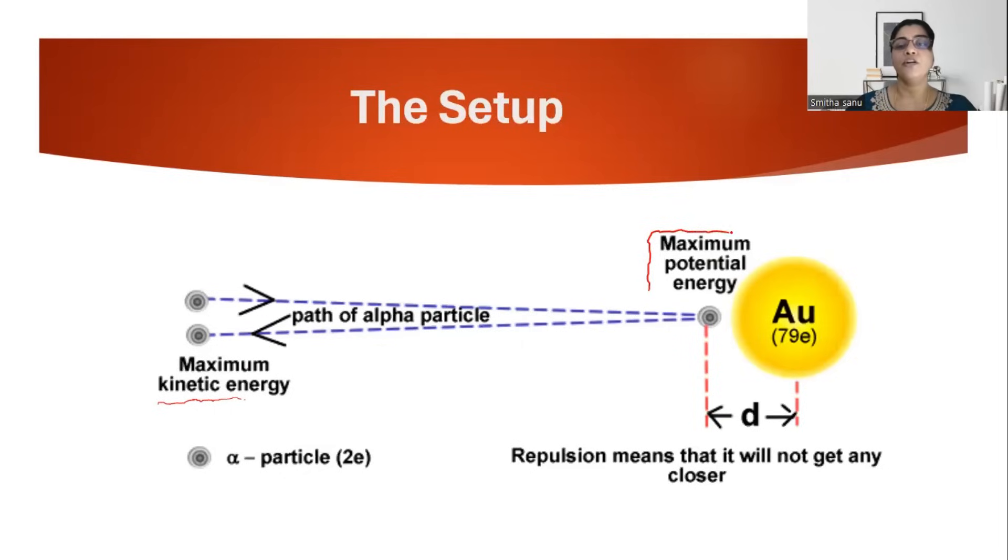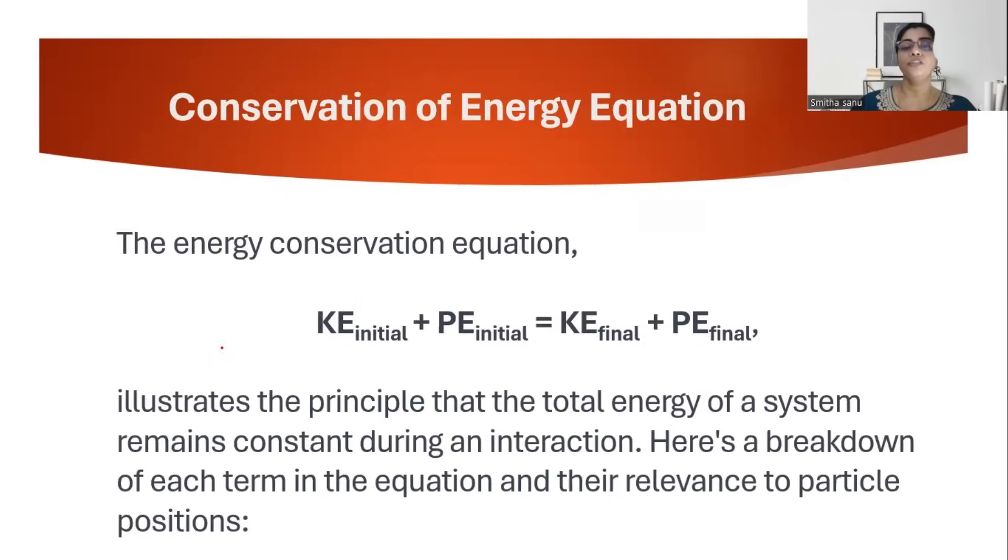So you can see the law of conservation of energy: the entire kinetic energy of the moving alpha particle is getting converted to maximum potential energy at the point of closest approach. The initial kinetic energy of alpha particles is based on its mass and velocity. The initial potential energy is on account of its charge and configuration and its position.